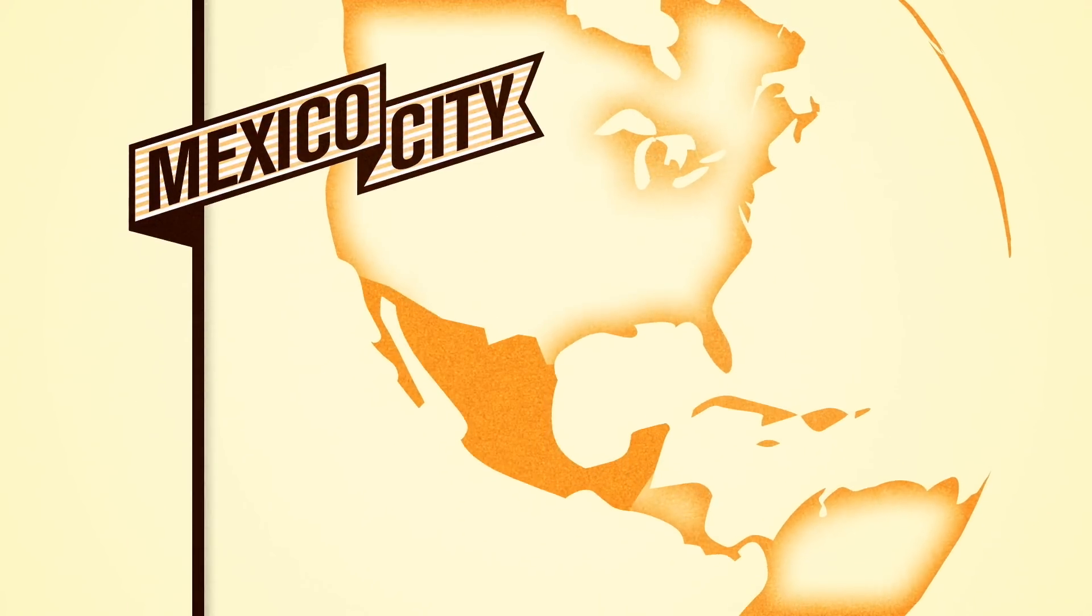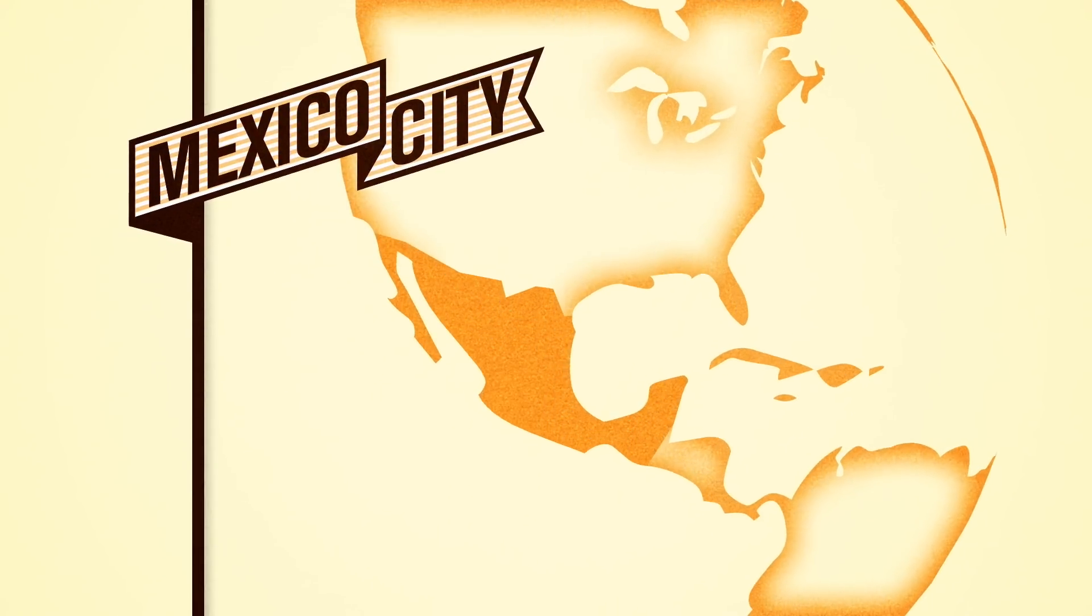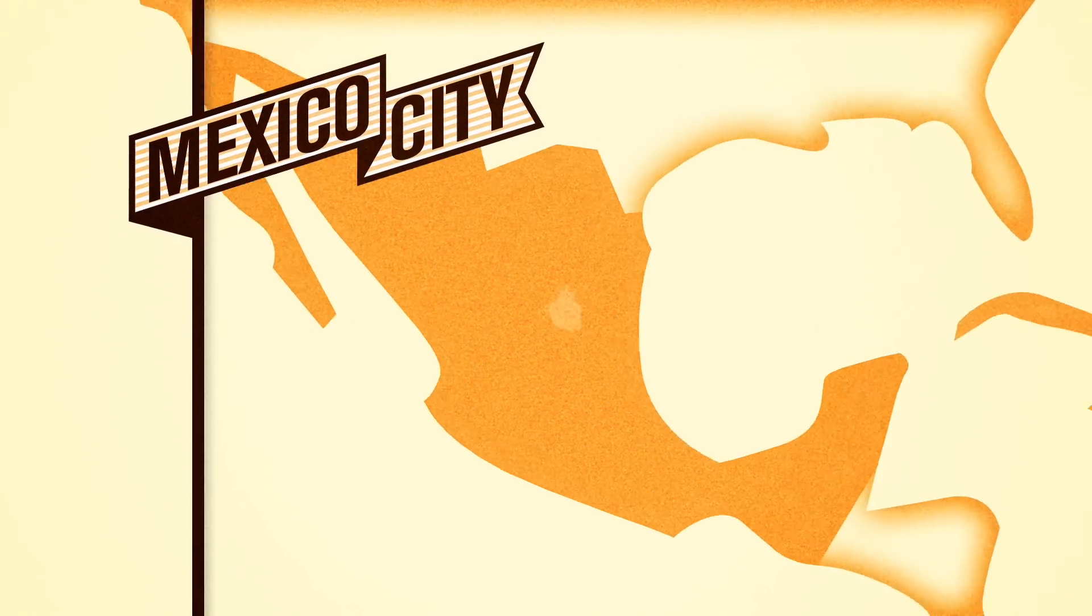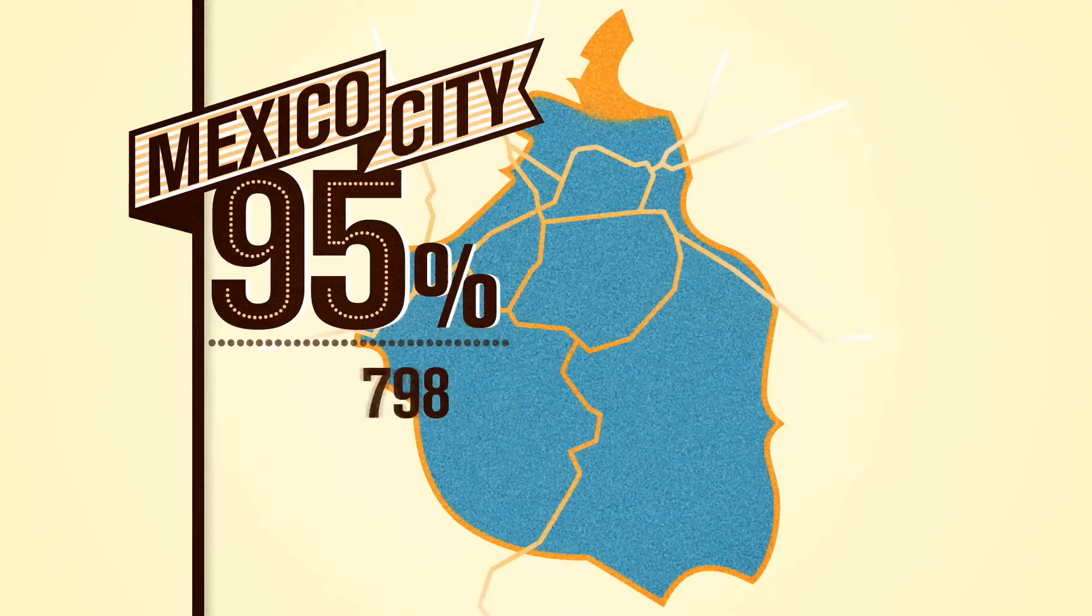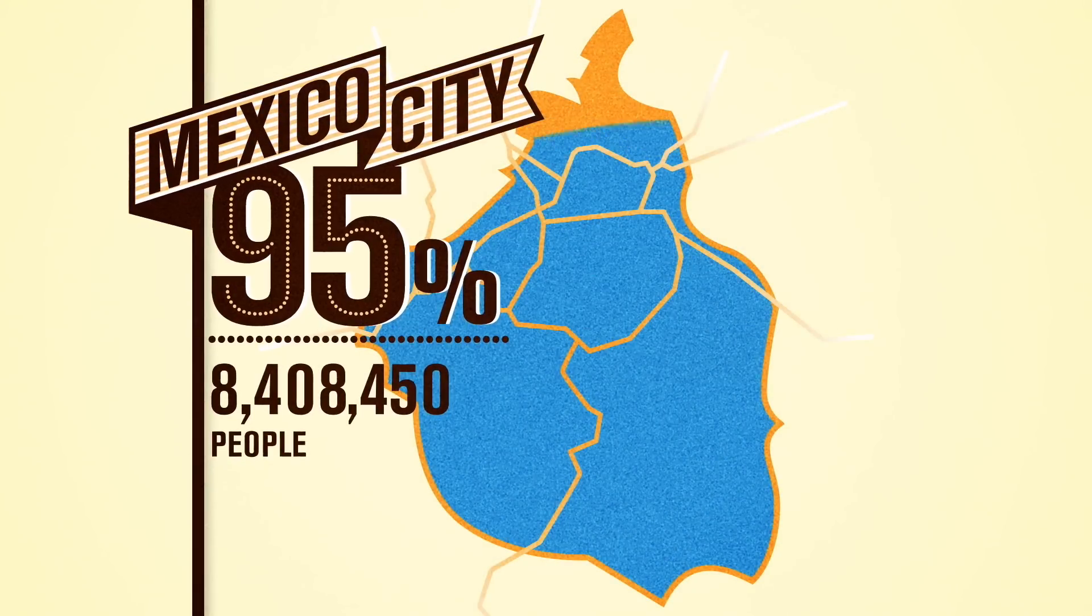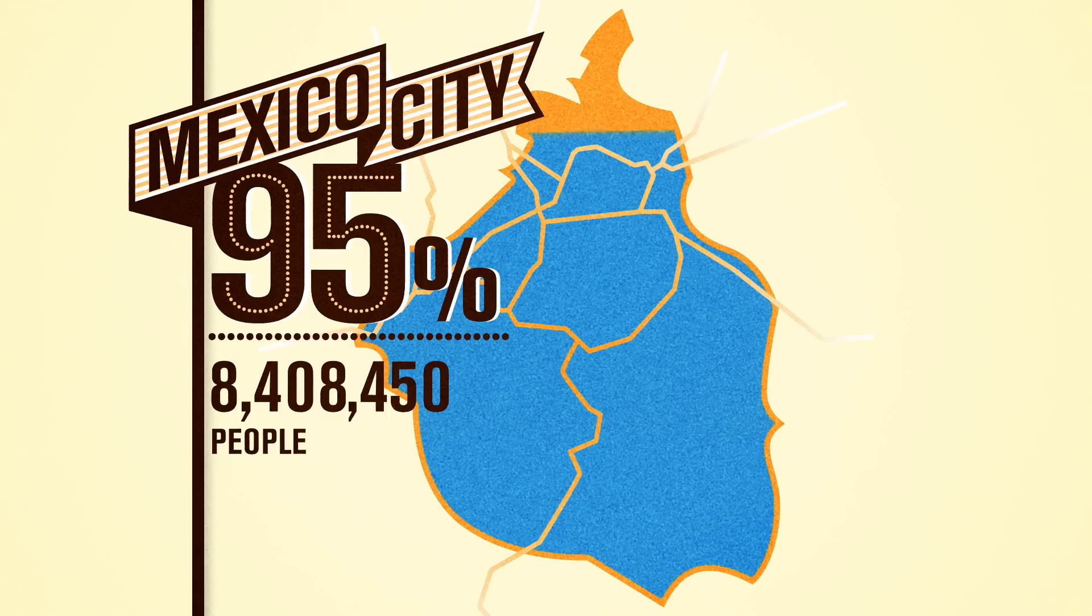In Mexico City, one of the world's most populated cities, there is no nearby surface water. That means that 95% of the population relies on groundwater for all their water needs.